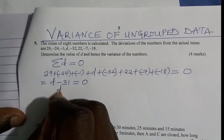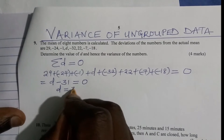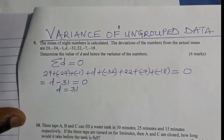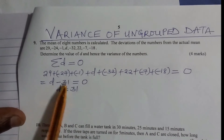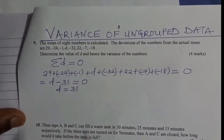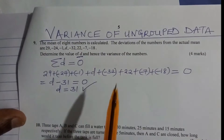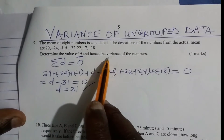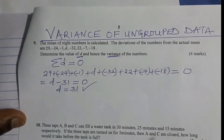Therefore, D will be given by 31. So D minus 31 equals zero, meaning D equals 31. Now we have found the value of D. Now we need to find the variance of the numbers.